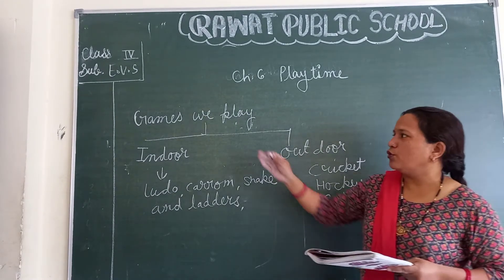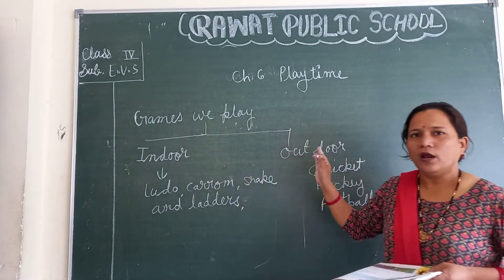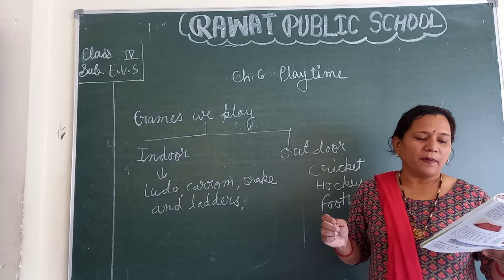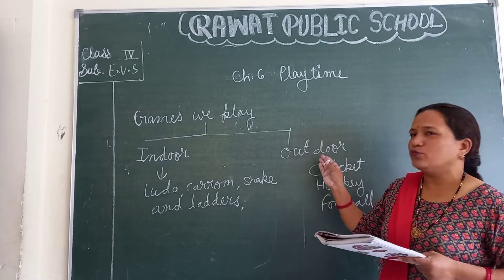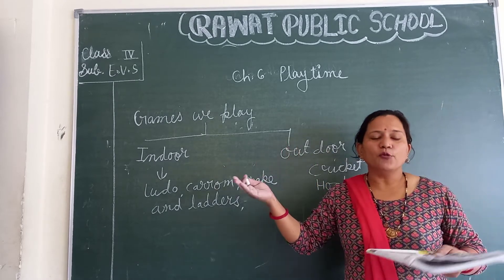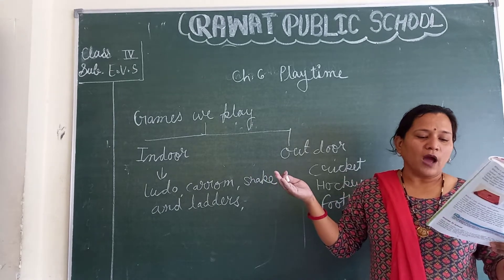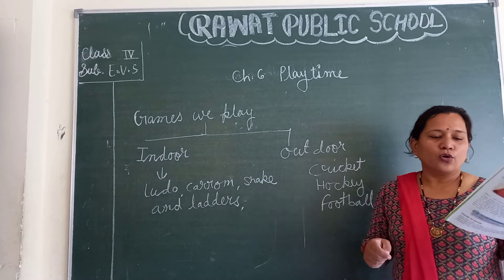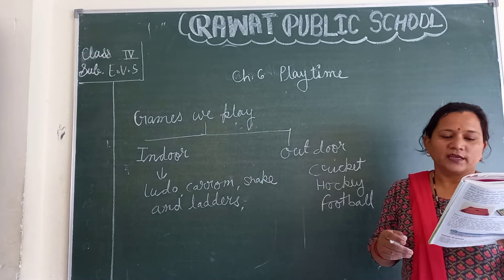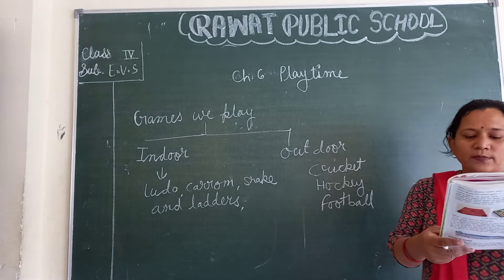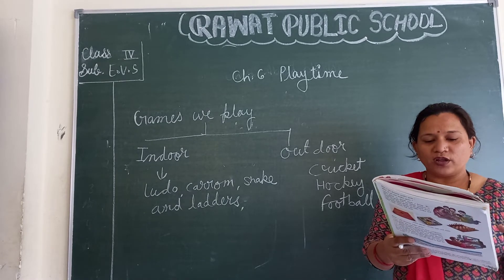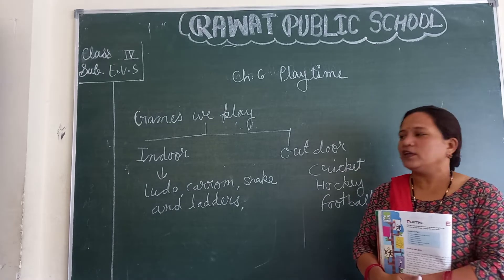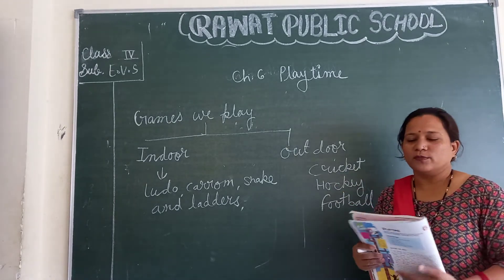Games can be indoor and outdoor. Outdoor games are played outside in the park and playground. Some common outdoor games are cricket, football, hockey, badminton, gilli-danda, and hopscotch. Outdoor games are generally played between two teams or two players.